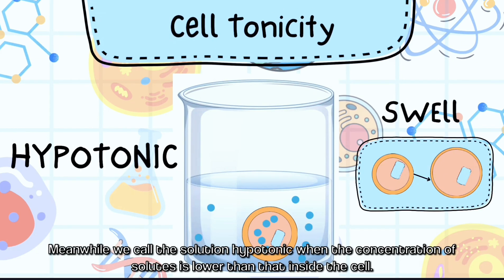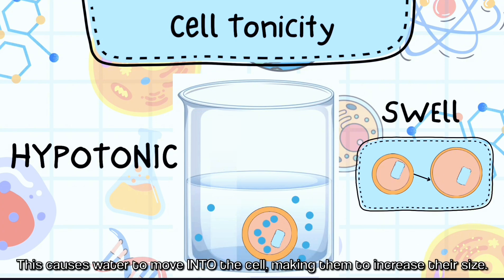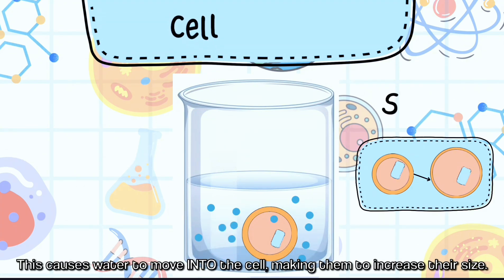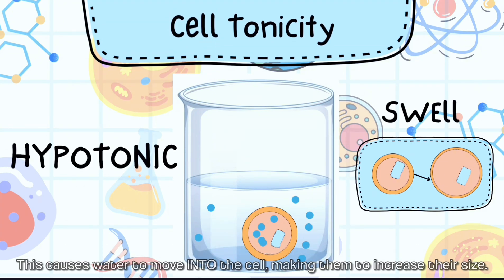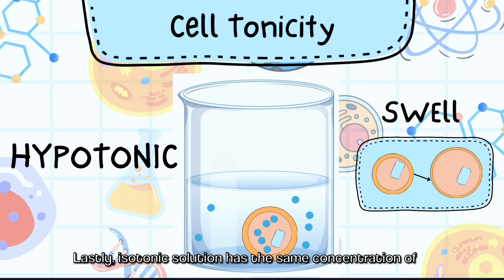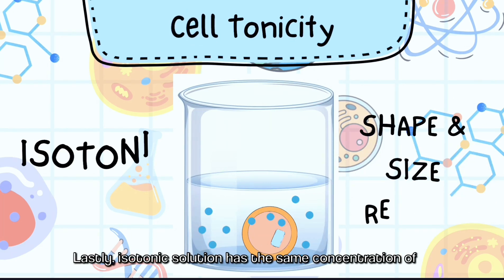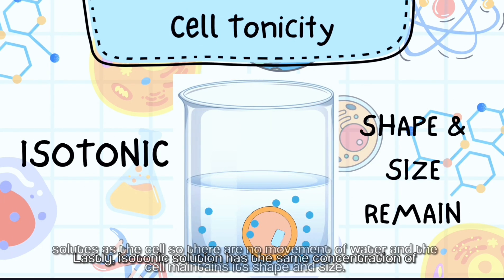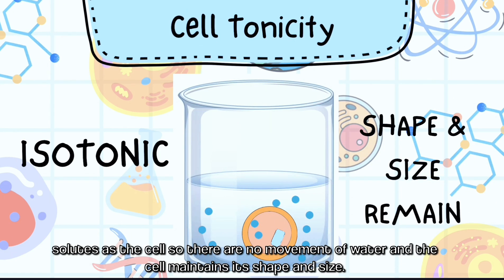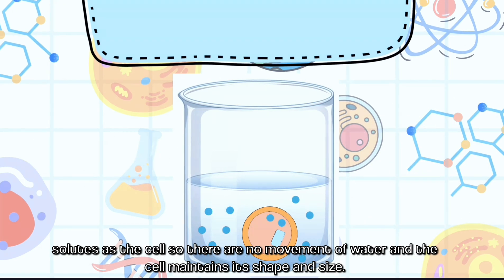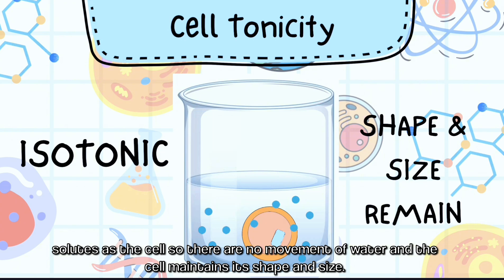Meanwhile, we call the solution hypotonic when the concentration of solutes is lower than that inside the cell. This causes water to move into the cell, making them to increase their size. Lastly, isotonic solution has the same concentration of solutes as the cell, so there is no movement of water and the cell maintains its shape and size.